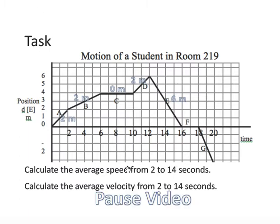Why don't you try this problem right now? Just to make sure you really understand the concept. That's the only way in physics you really understand if you understand something. It's by trying something. So calculate the average speed from 2 to 14 seconds. And then calculate the average velocity from 2 to 14 seconds. Go ahead. Pause the video now.